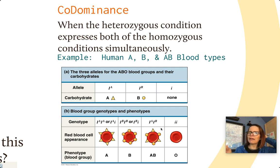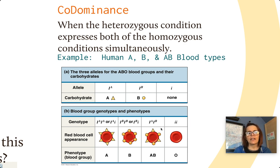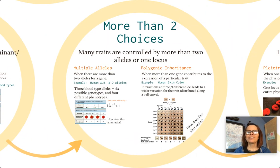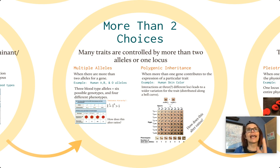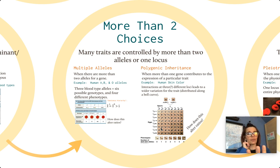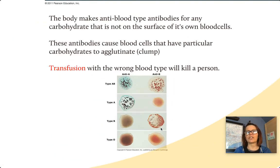Now let's talk about multiple alleles. Multiple alleles is when you have more than two choices for a gene. For blood types, there's an A allele, a B allele, and then what we call the recessive O allele. So instead of just the usual dominant and recessive pair, we have three choices. You still get two total — one from mom and one from dad — but there are several varieties you could have gotten.